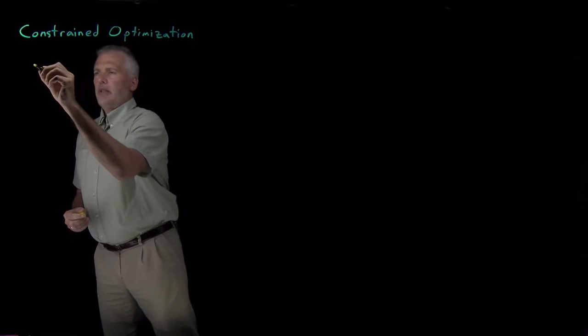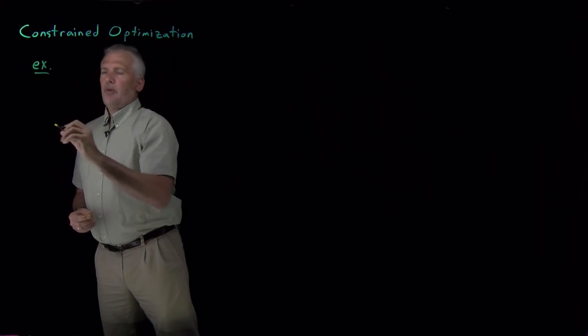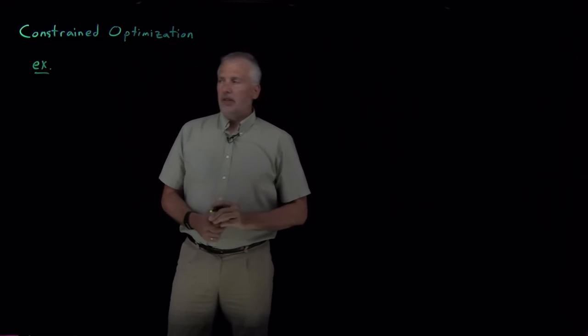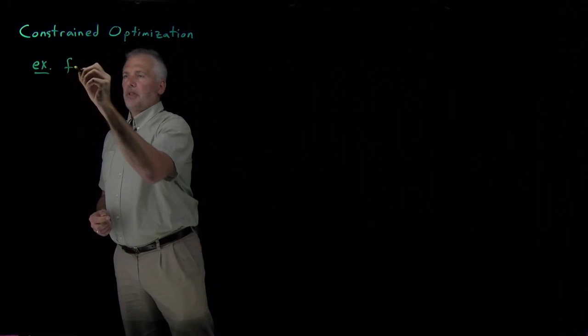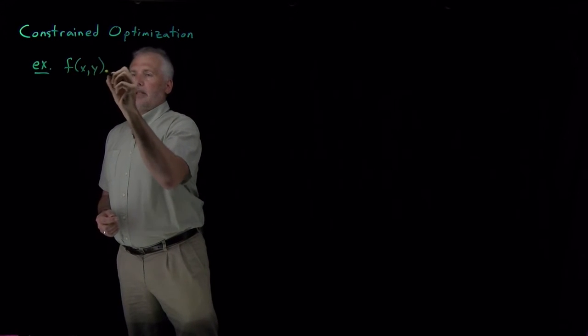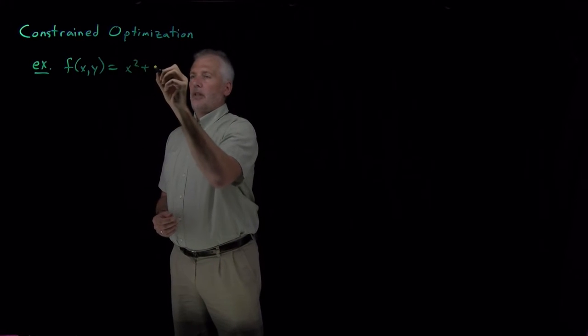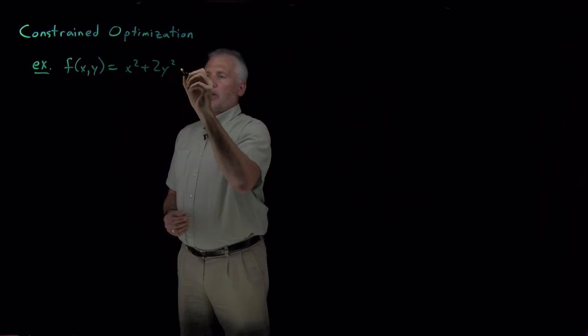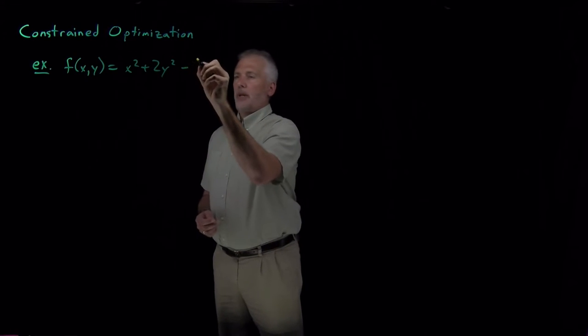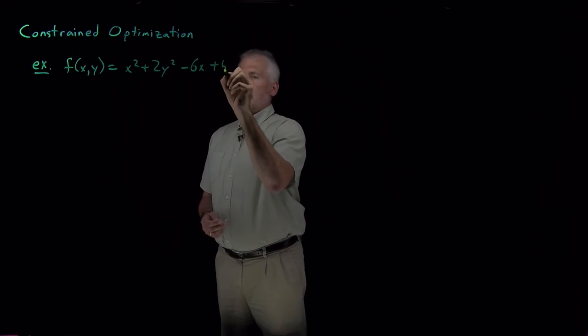So to keep things simple at first, let's start out with a purely mathematical example. In fact, we'll stick with the example we considered before. Let's take the function x² + 2y² - 6x + 75.